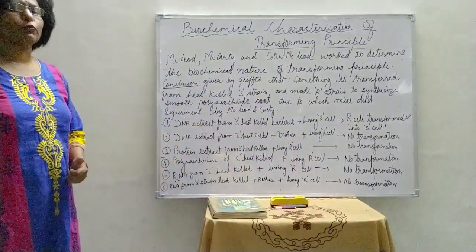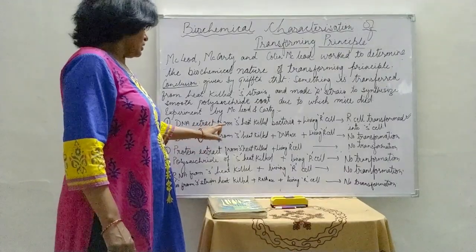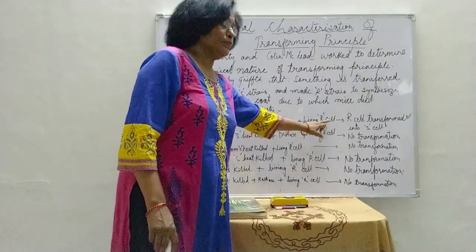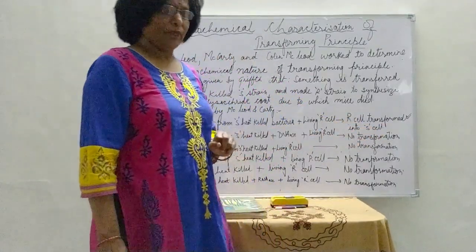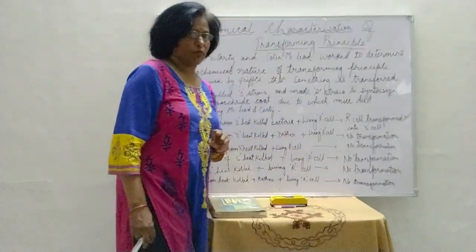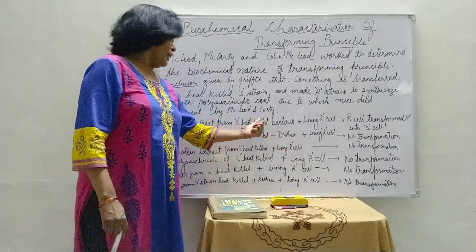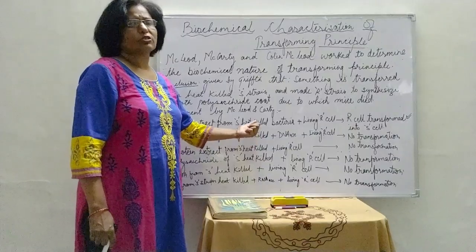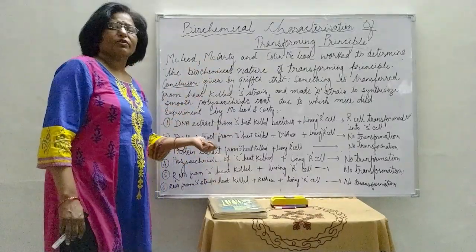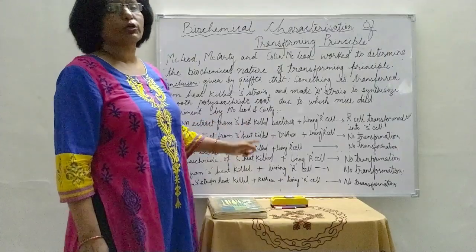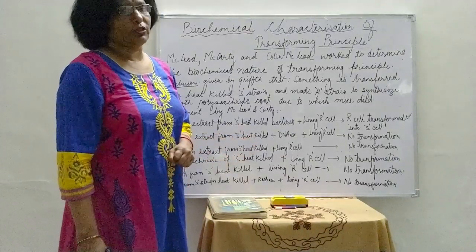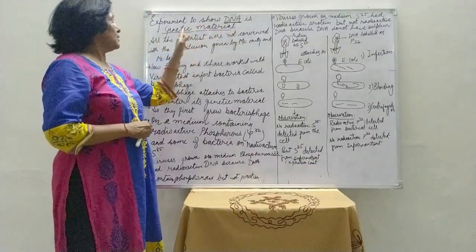Out of these six series of experiments, only the DNA extract taken from the S type heat-killed bacteria and injected into R cell bacteria was capable of transforming R cell into S cell. In all the remaining five experimental series there was no transformation. This means that DNA is the only molecule responsible to transfer the character.